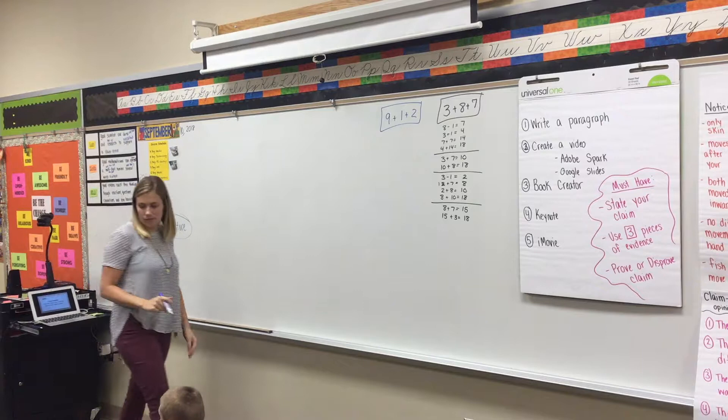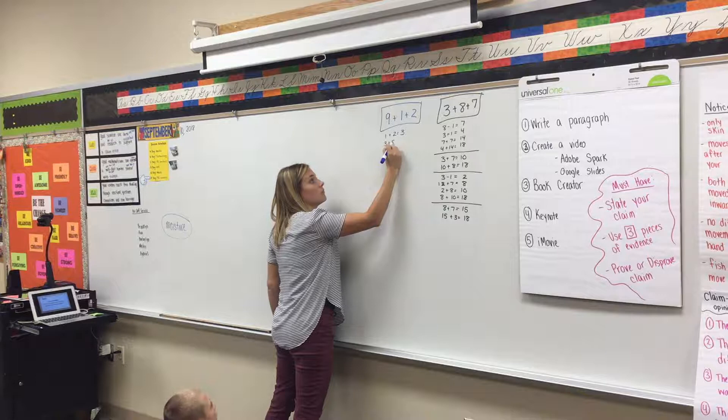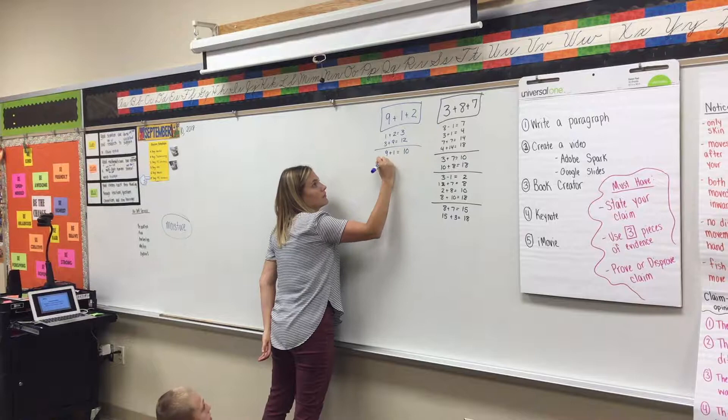I added 1 plus 2, that got me 3, and I added 3 plus 9 plus 3. What is Mia's strategy?